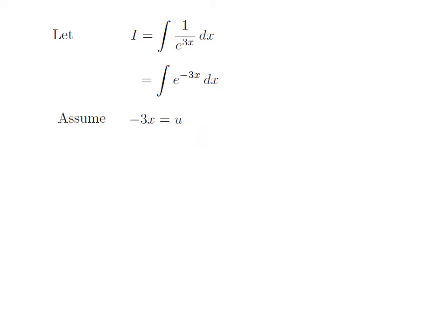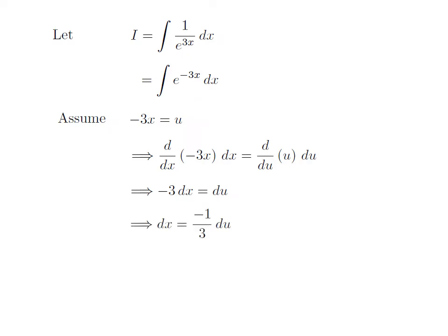To simplify the integration, I have assumed minus 3x is equal to u. Taking differential of both sides, we get differentiation of minus 3x with respect to x into differential of x is equal to differentiation of u with respect to u into differential of u. Differentiation of minus 3x with respect to x is equal to minus 3, and differentiation of u with respect to u is equal to 1. So we are left with minus 3 into differential of x is equal to differential of u. Taking minus 3 to the right, we get differential of x is equal to minus 1 upon 3 into differential of u.